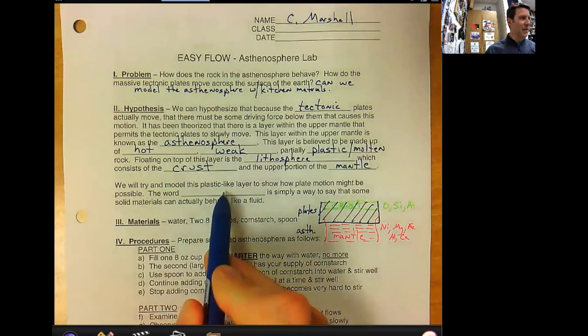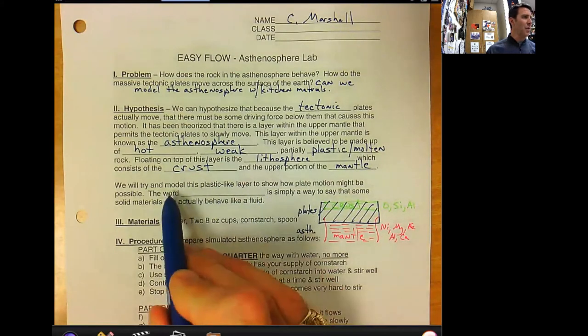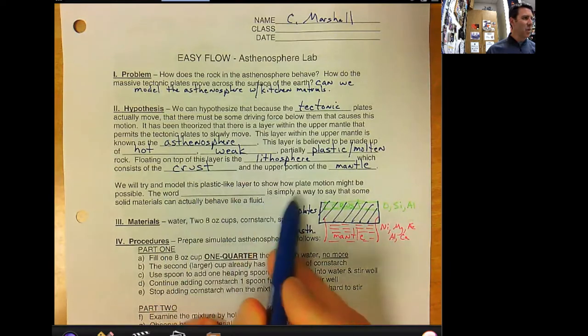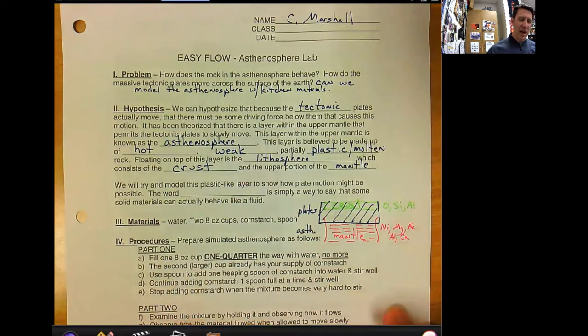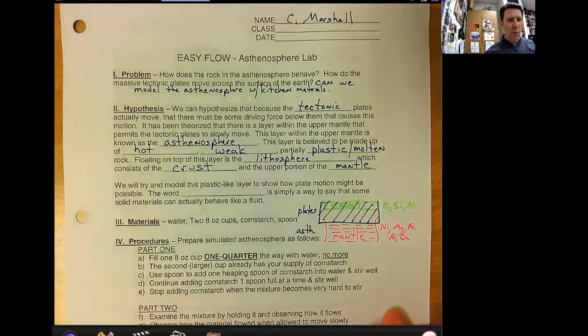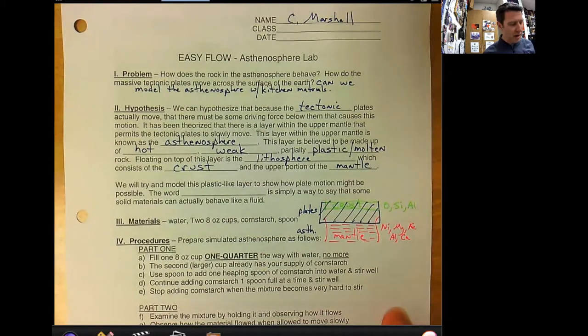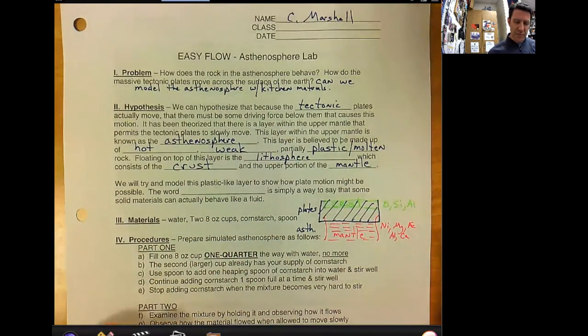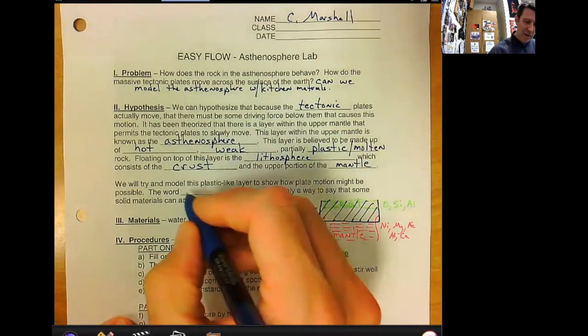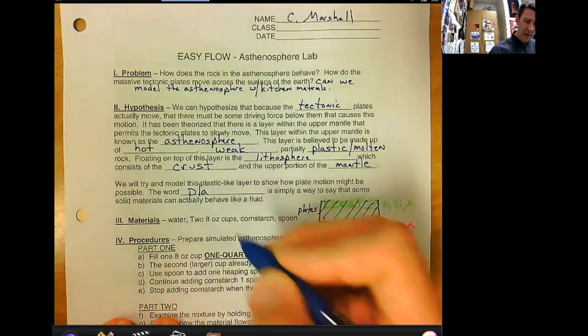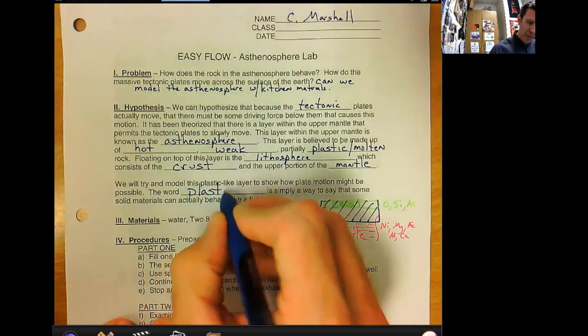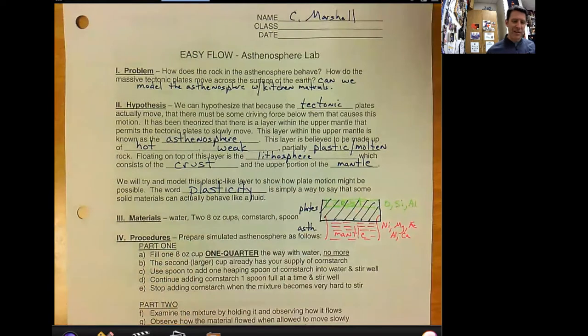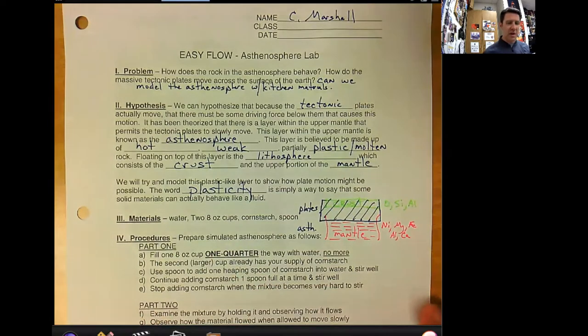We will try and model this plastic-like layer, the asthenosphere, to show how plate motion might be possible. The word plastic is simply a way to say that some solid materials can actually behave like a fluid. If you think of a Walmart bag, those thin produce bags that you put your bananas and apples in at the grocery store, if you take one of those and you pull and stretch it, what happens to it? Well, it stretches and deforms and it does not snap back, so it's not elastic, it's not elasticity, but plasticity.